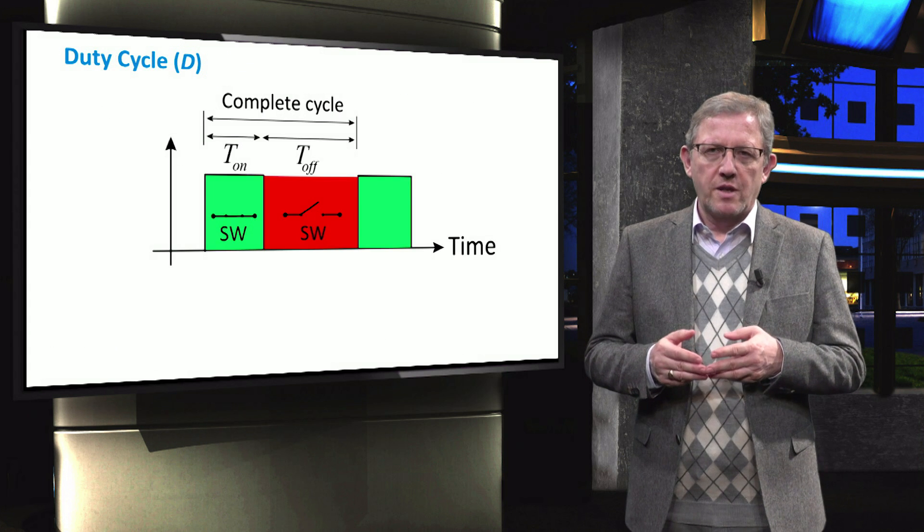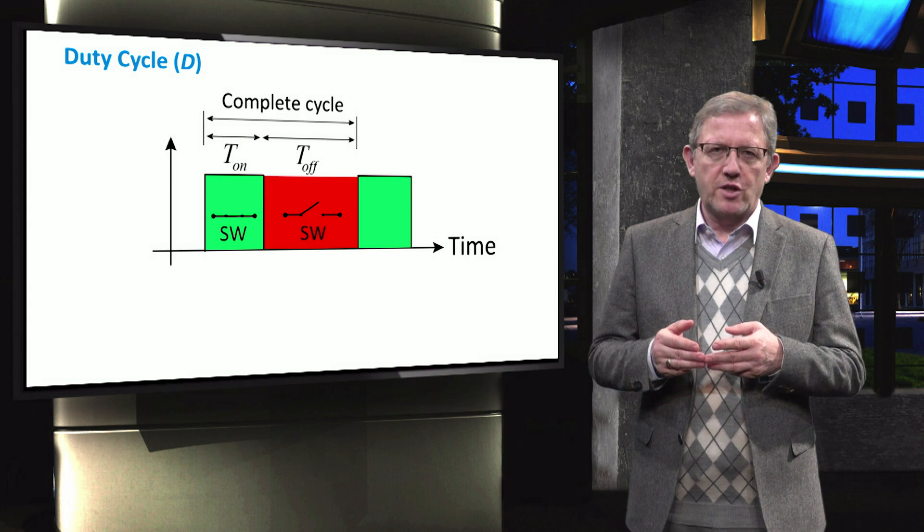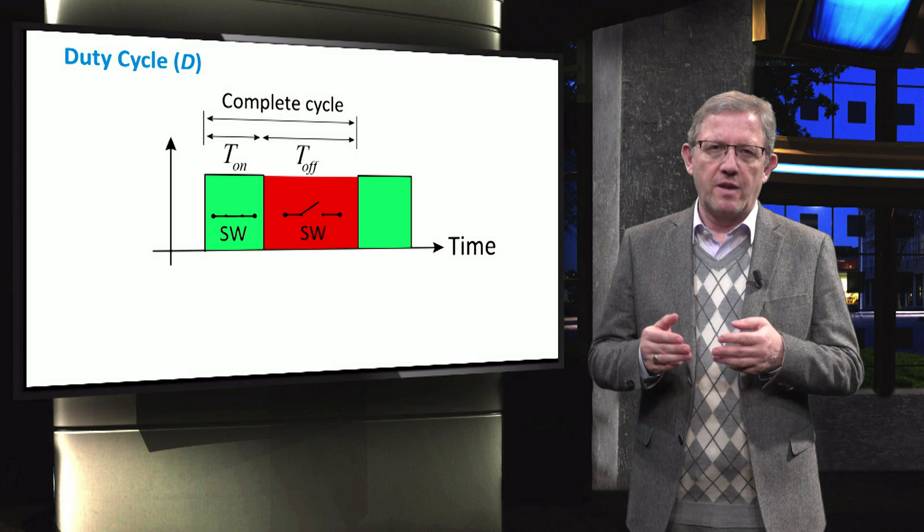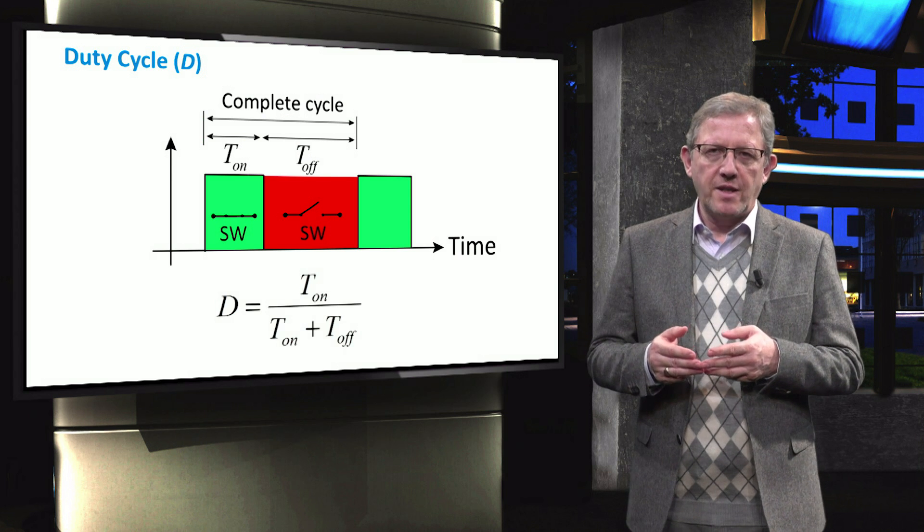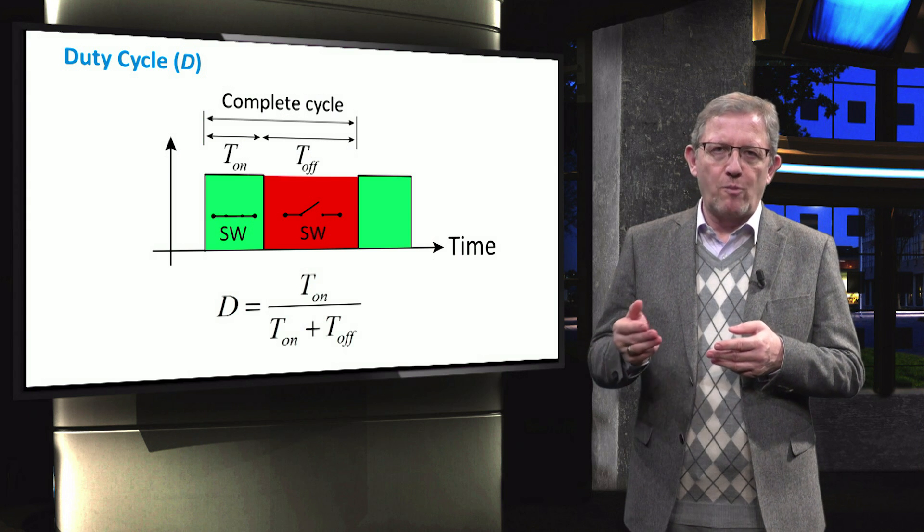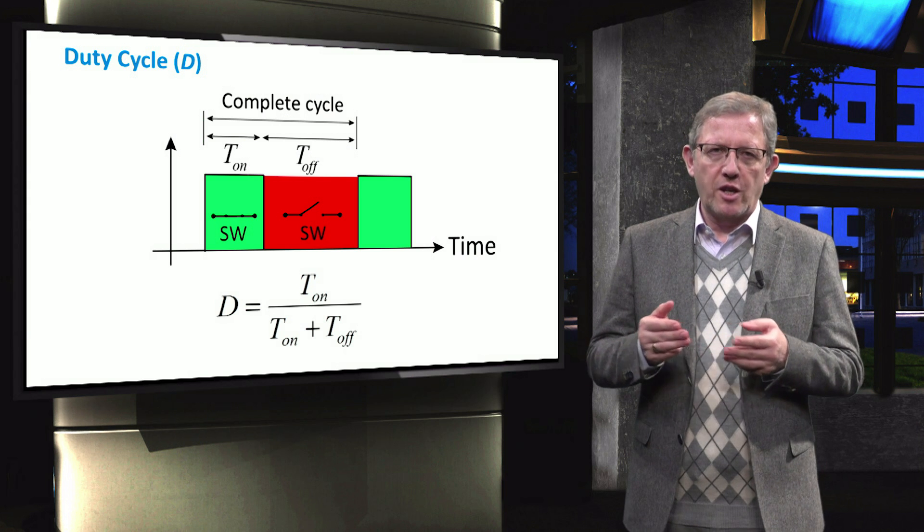The graph shows the time intervals t_on and t_off during which a switch turns on and turns off over a complete switching cycle respectively. The duty cycle is defined as the ratio of on time period divided by the complete switching cycle. The value of duty cycle ranges from 0 to 1.